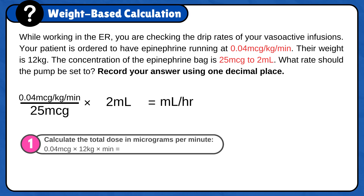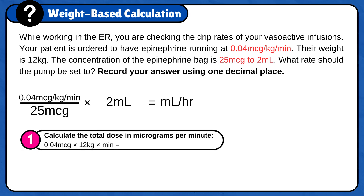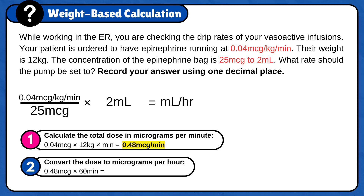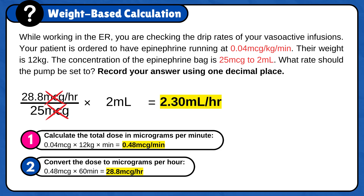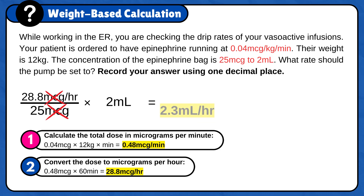First, calculate the total dose in micrograms per minute: 0.04 micrograms times 12 kilograms times 1 minute is 0.48 micrograms per minute. Then convert the dose to micrograms per hour: 0.48 micrograms times 60 minutes — because you have 60 minutes in 1 hour — gives 28.8 micrograms per hour. Now plug the answer into the formula: 28.8 micrograms per hour divided by 25 micrograms times 2 milliliters. Micrograms cancel out and the answer is 2.30 milliliters per hour. Round to one decimal place — since the hundredth digit is between 0 and 4, round down. The final answer is 2.3 milliliters per hour.